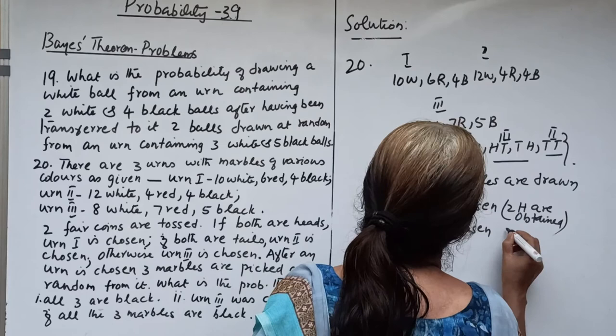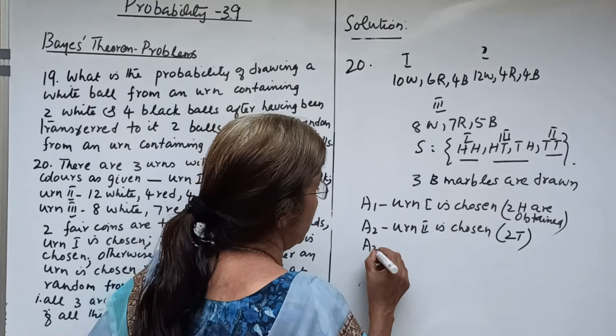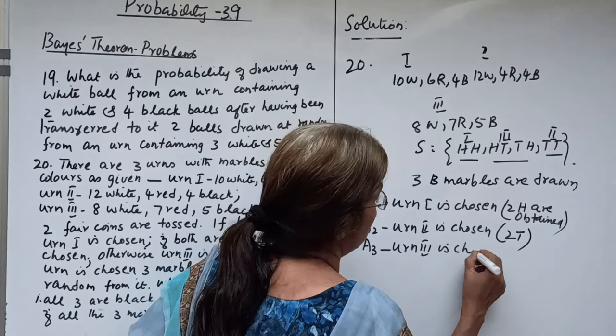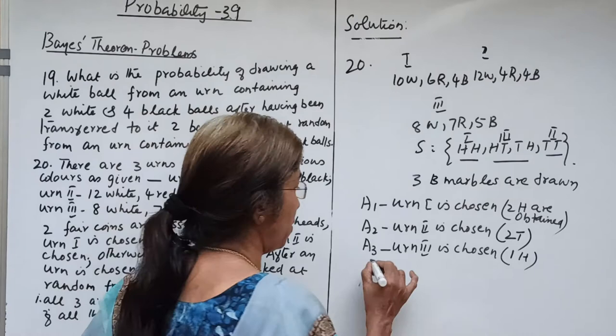If both coins are tails, urn 2 is chosen — P(A2) equals 1 by 4. And A3 is urn 3 chosen: either HT or TH, that is 1 head, so P(A3) equals 2 by 4. And B is the event that 3 black marbles are drawn.